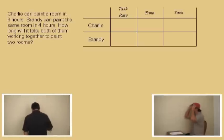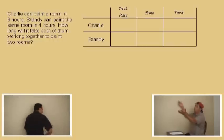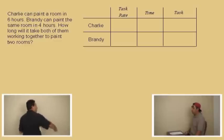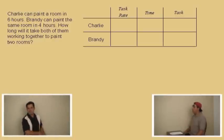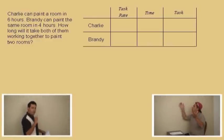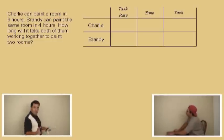Let's get it listed right there. Charlie can paint a room in six hours. Brandy can paint the same room in four hours. So who's faster — Charlie or Brandy? Charlie's too slow, because Charlie takes six hours to paint the room but Brandy can do it in four. How long will it take both of them working together to paint two rooms? Both rooms, we're assuming, are the same size.